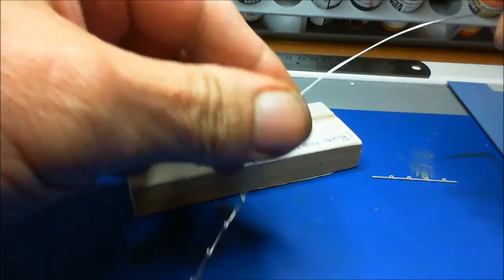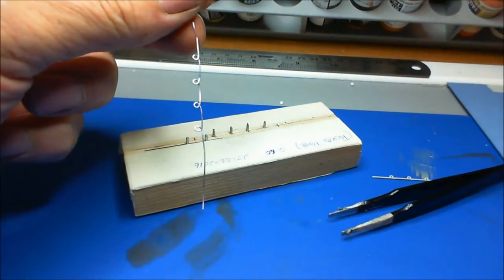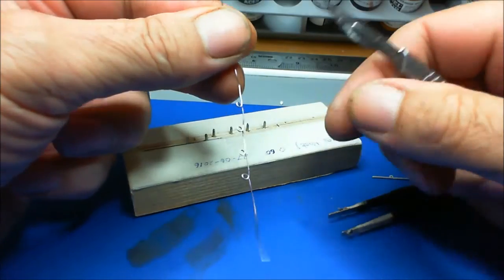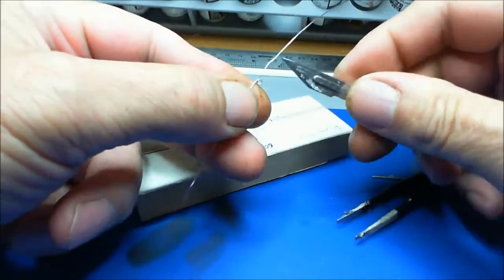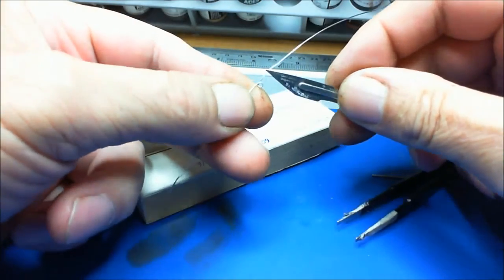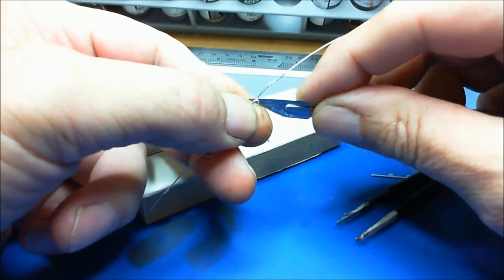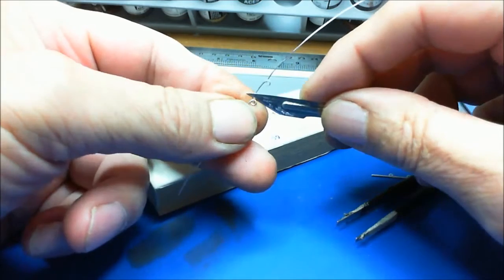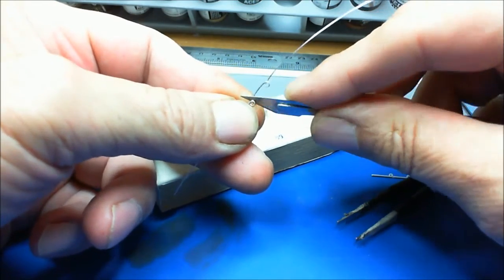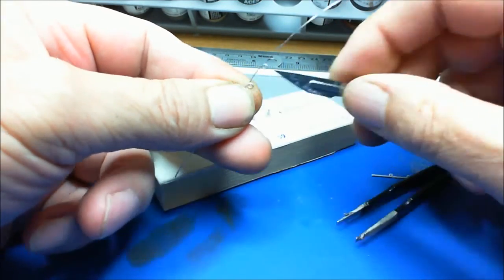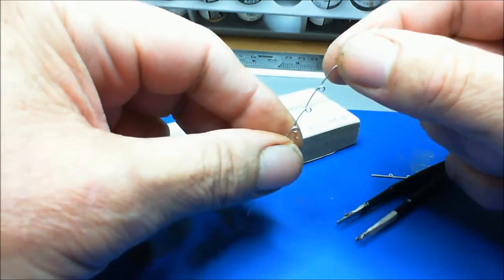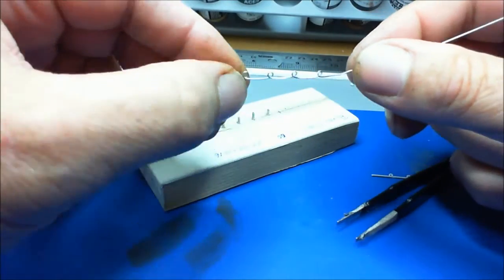Then what I do is you cut it to what length you want. Then just get your scalpel blade or your hobby knife and gently open them up a little tiny bit. Only a fraction, just to allow your barbed wire to go through. Then you can just crimp them up again.